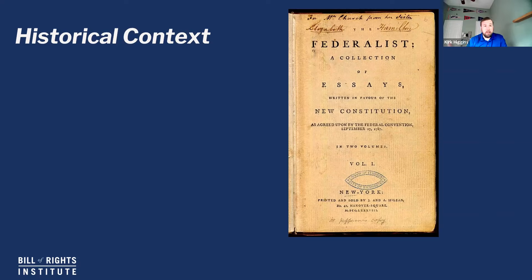I have a whole video on the Articles of Confederation, so if you want to check that out and learn more about the document, take a look at it. I stepped through the whole thing. But suffice to say, the Articles of Confederation were the charter that was governing the United States from 1781 until when the Federalist Papers were written in 1787.